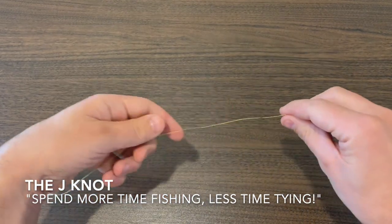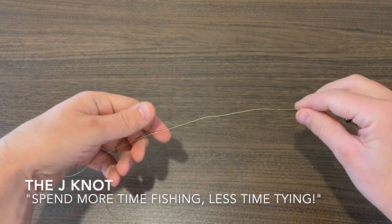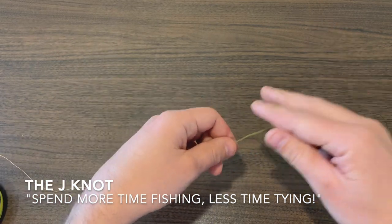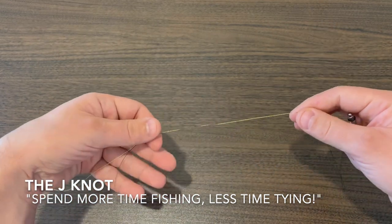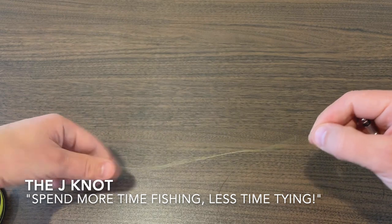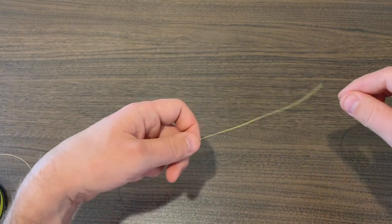Hi, this is Nate and I'm going to teach you how to tie a J knot with the knot needle. First thing you're going to do is take your two lines that you want to attach, like so.